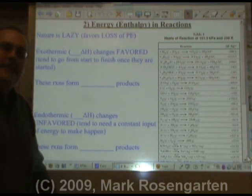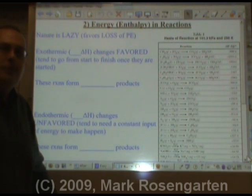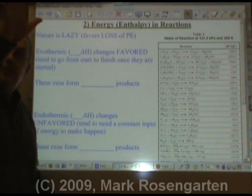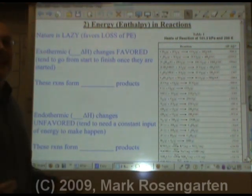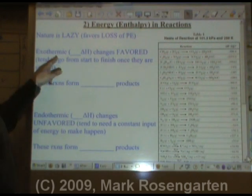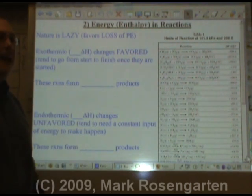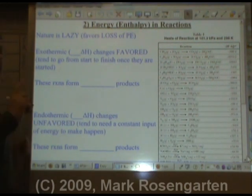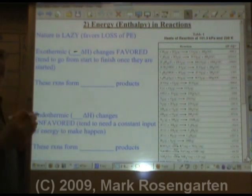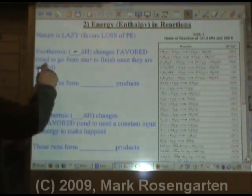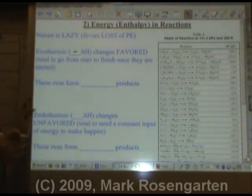In nature, things tend toward the lowest possible energy state. Nature favors exothermic reactions — nature is lazy. This is why you see creatures conserving their energy. Exothermic reactions with negative delta H are favored; they tend to be the reactions that happen in nature and tend to go from start to finish once they're started.